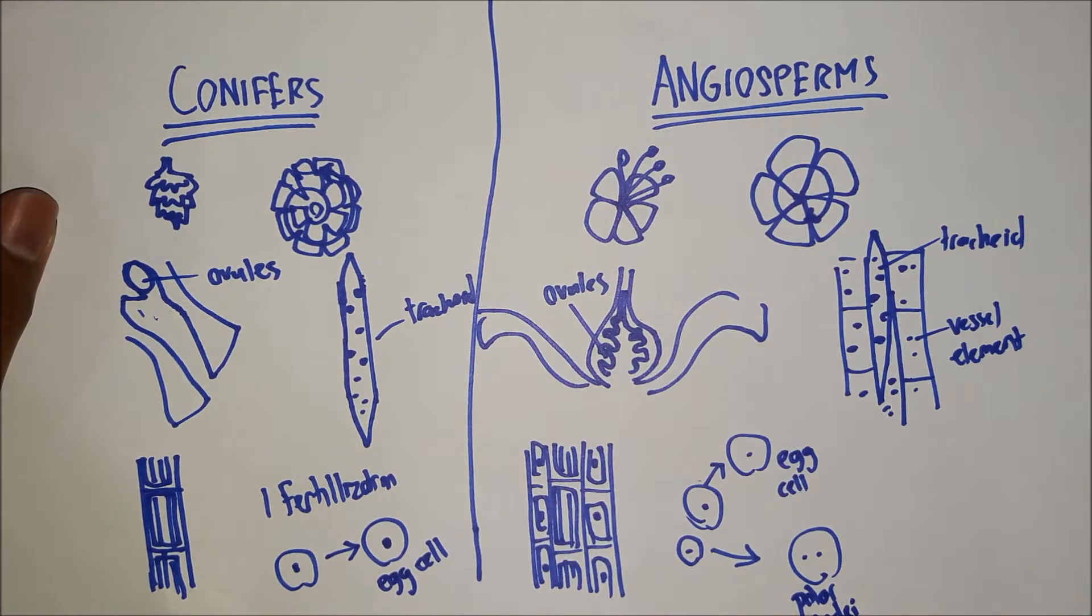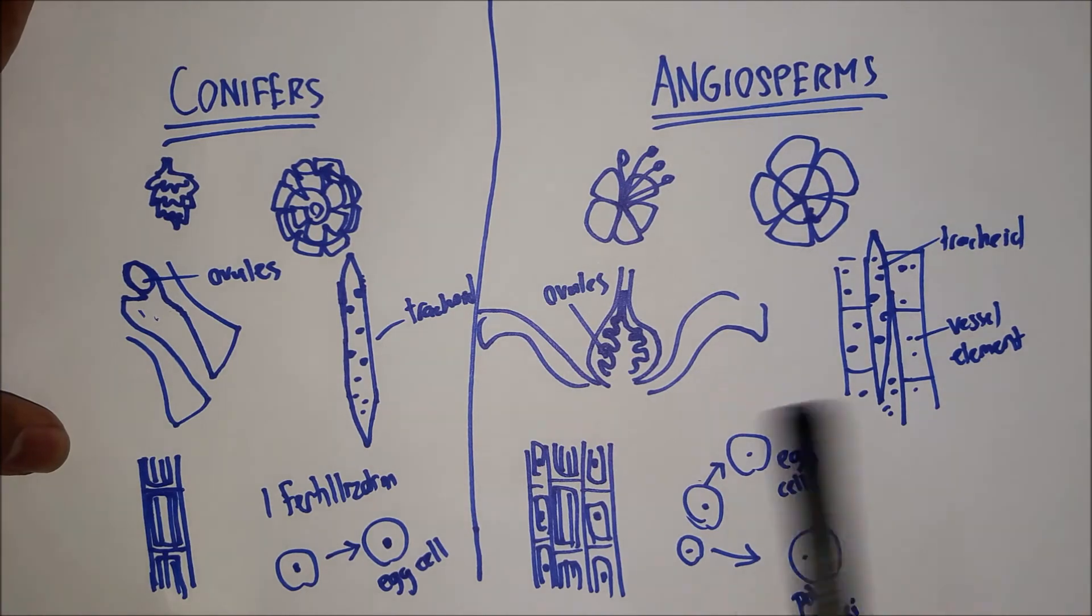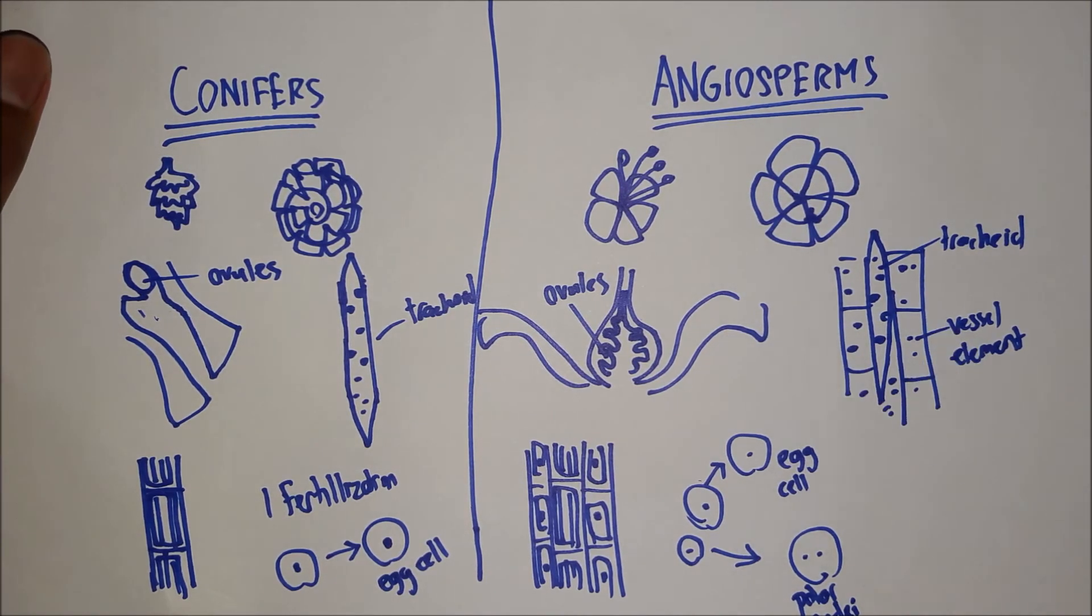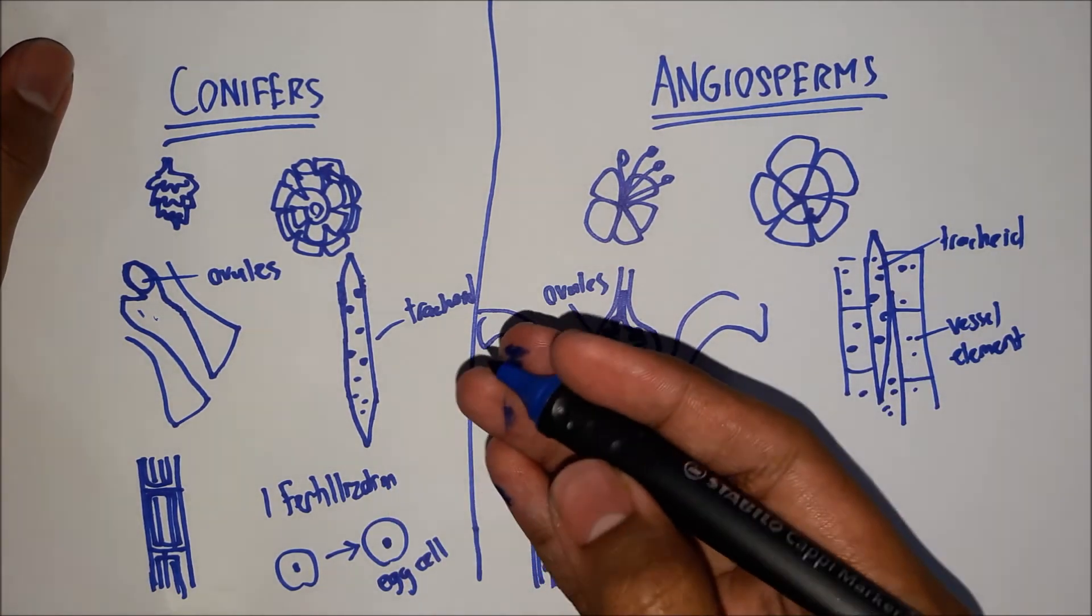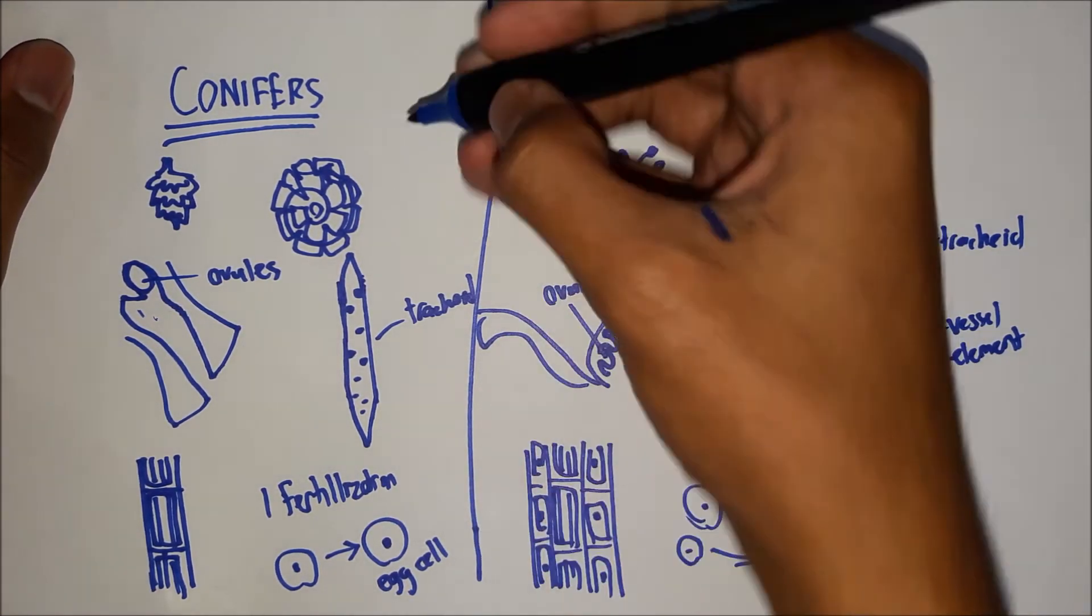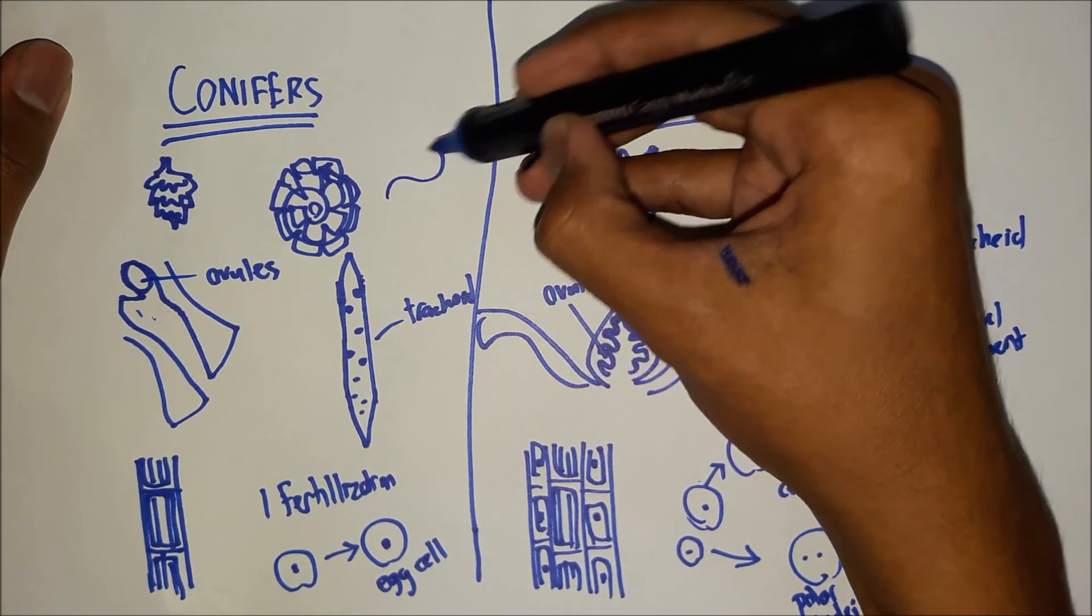And conifers only have an egg cell. Finally, the male gametes of conifers, they are transferred by wind.